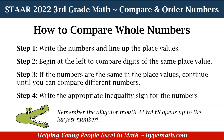Let's do a little review about comparing whole numbers. Step one: we write the numbers and line up the place values. Step two: begin at the left to compare digits of the same place value. Step three: if the numbers are the same in the place values, continue until you can compare different numbers — you just move to the right. For instance, if both numbers have a four in the hundreds place, move to the right to the tens place. Step four: write the appropriate inequality sign, and remember the alligator mouth always opens up to the largest number.